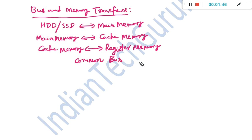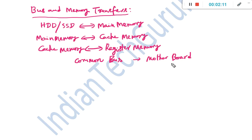Generally, this common bus is laid on the motherboard. If you open the cabinet and look inside the motherboard, there will be parallel lines between several devices. These parallel lines are used to transmit data, and this common path is called the common bus.